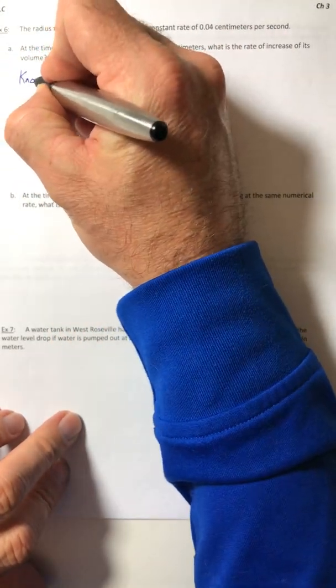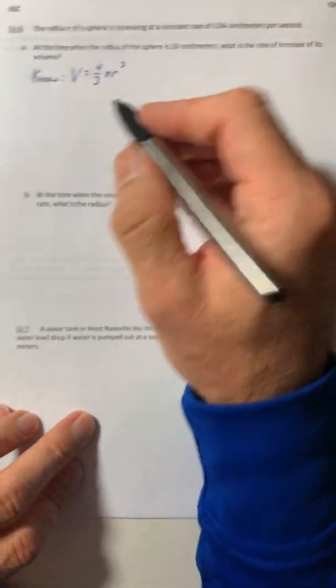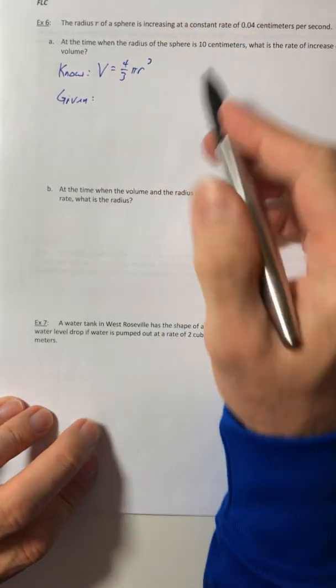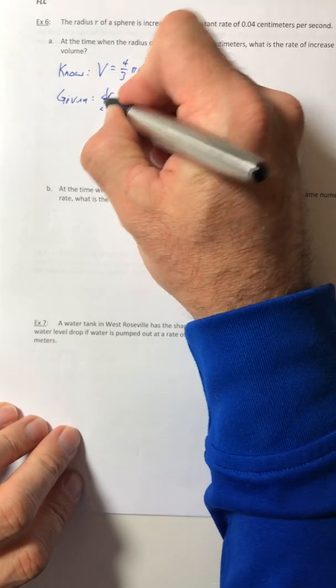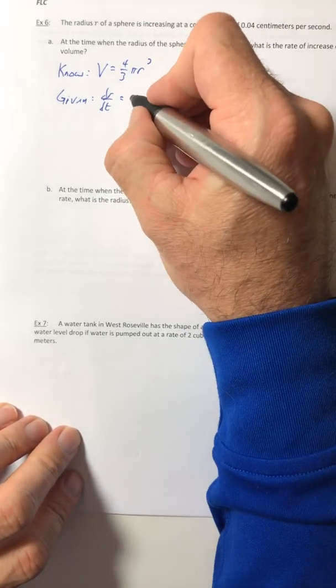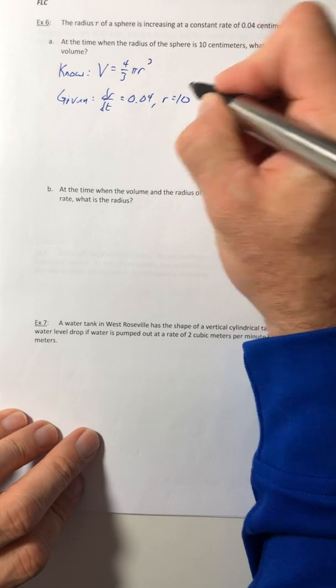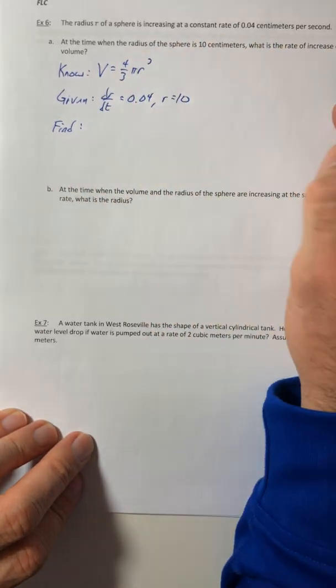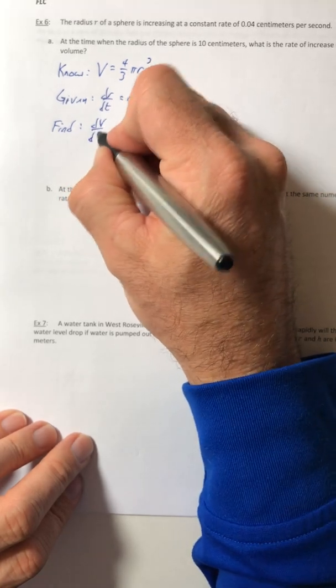So they're talking about the volume of a sphere again. So that's going to be your no. For the givens, we know the radius is increasing at a rate, so dr dt is equal to 0.04. The radius is 10. That's all they really gave us. So what do they want us to find? What is the rate of increase of its volume? So dv dt.